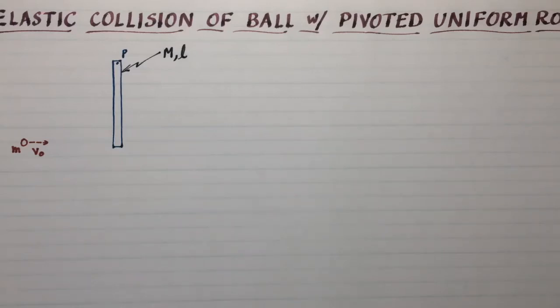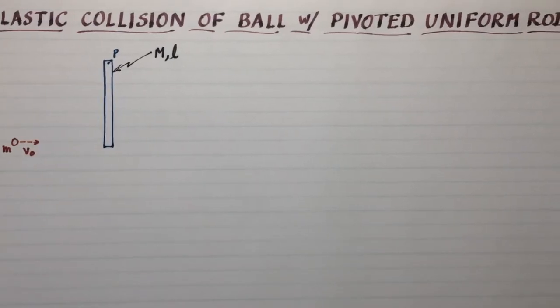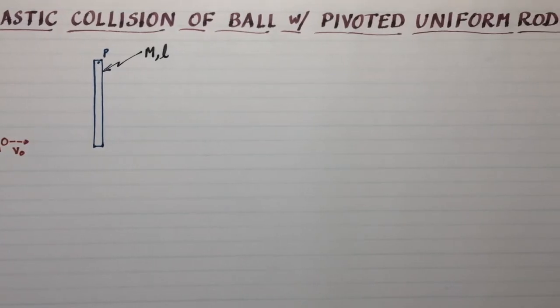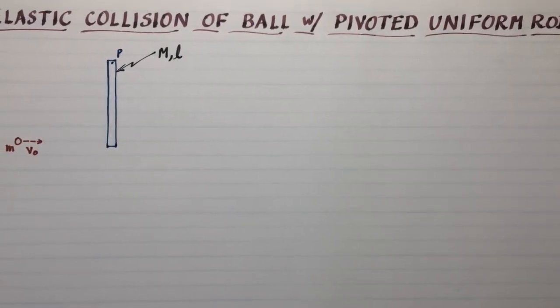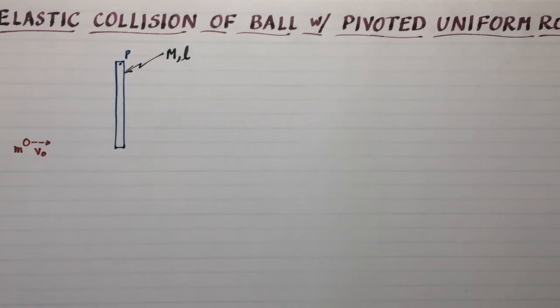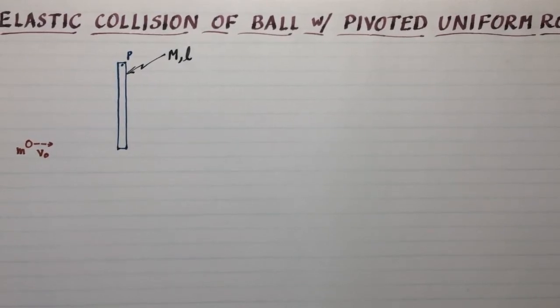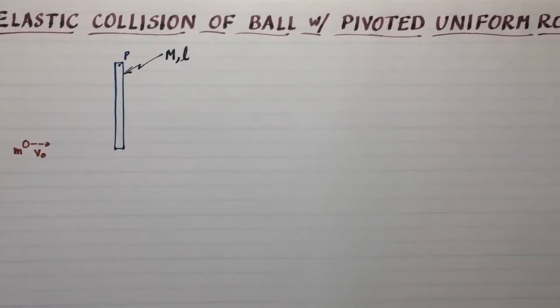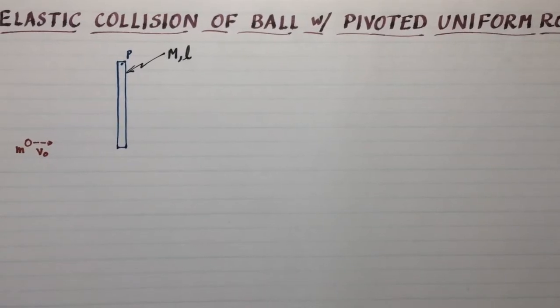I thought I would do at least one example of a perfectly elastic collision of a ball with a uniform rod. We'll take the rod to be pivoted at one end. Since it's uniform, things are going to be fairly simple. We don't have to integrate to find the moment of inertia. It's just a standard result.